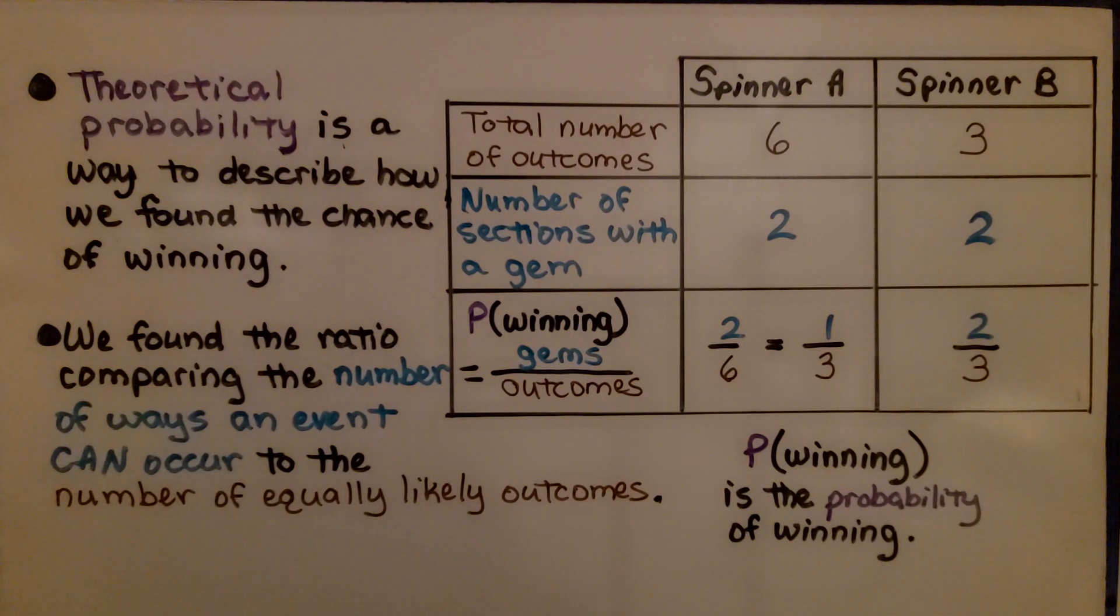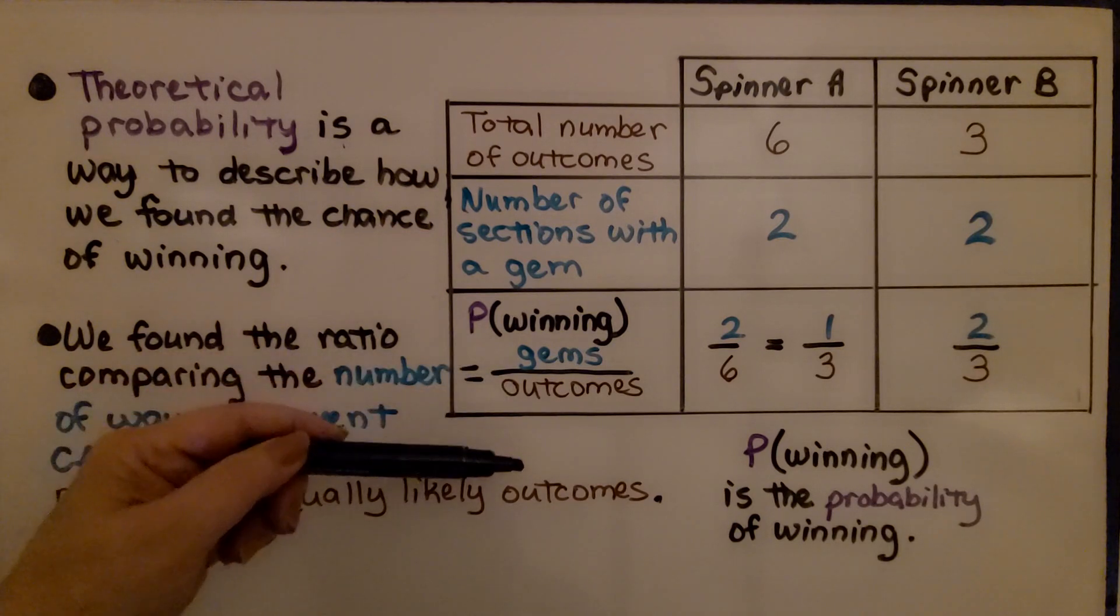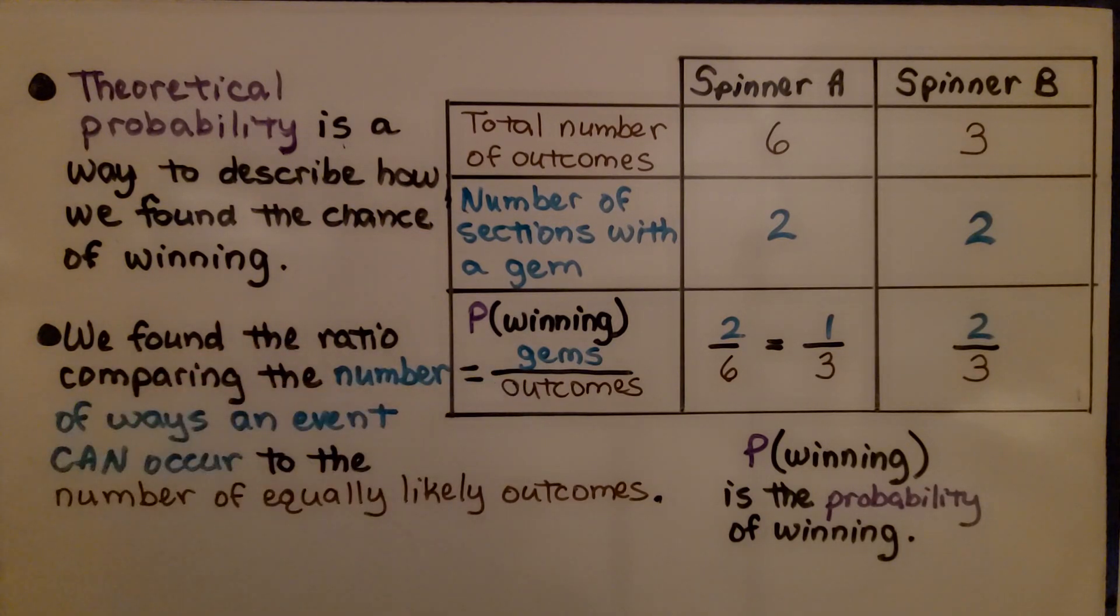Theoretical probability is a way to describe how we found the chance of winning. We found the ratio comparing the number of ways an event can occur to the number of equally likely outcomes. This P(winning) is the probability of winning, of the arrow pointing to a gem as a ratio, gems to outcomes.